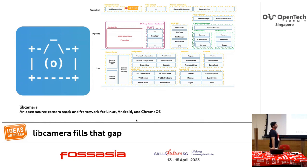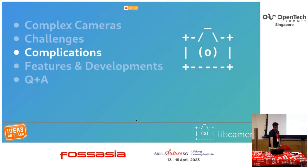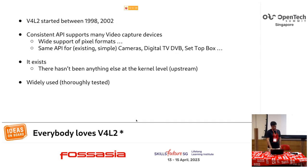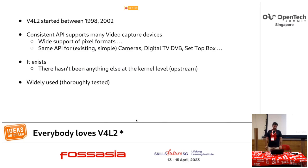To summarize: libcamera is an open source camera stack and framework for Linux, Android, and Chrome OS. What are the complications? V4L2 is everywhere and everybody seems to love it. It exists in the upstream Linux kernel — for media capture, V4L2 is the default API the kernel provides. If in the future the kernel comes up with a different real capture API, libcamera would be happy to support it and we are working in that direction as well.